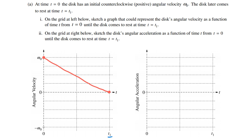So if the slope is constant, I simply connect those two points with a straight line. As long as you've made an effort to draw a straight line connecting those two points — starting at omega naught and ending at zero for the angular velocity — you should get full points for that graph.